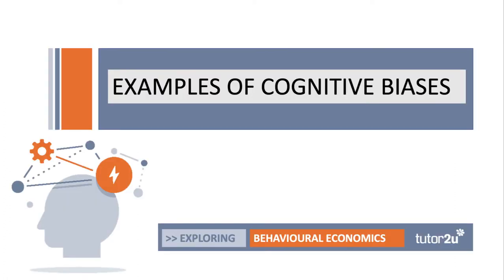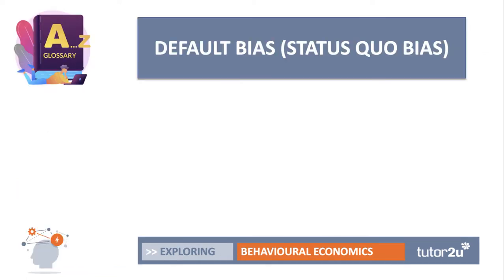However, we know that in the real world that people inhabit — the complex, messy world — there are often good examples of cognitive or behavioural biases. A cognitive bias is simply a systematic error in thinking that happens when people are processing and interpreting information in the world around them, and that affects the decisions and judgments they make. So let's work through some examples of cognitive or behavioural biases.